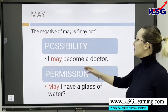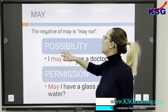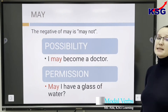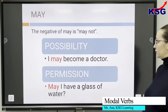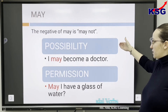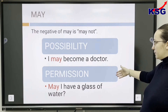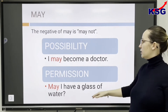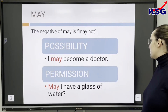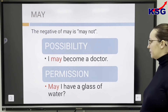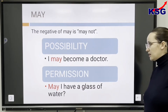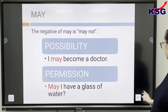The next modal verb is MAY. The negative of MAY is MAY NOT. It can express possibility and permission. For example: May I have a glass of water?